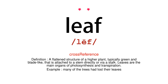Cross-reference. Definition: a flattened structure of a higher plant, typically green and bladelike, that is attached to a stem directly or via a stalk. Leaves are the main organs of photosynthesis and transpiration. Example: many of the trees had lost their leaves.